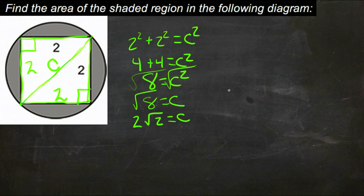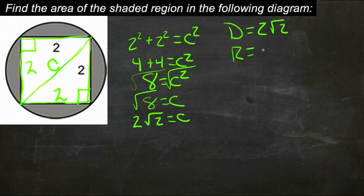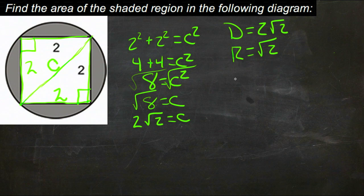So the diameter then, the diameter of our circle is 2 root 2, and that means that the radius, which is half of the diameter, would be just root 2, and the area of a circle is pi r squared.